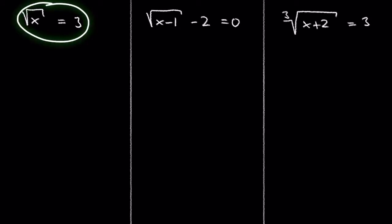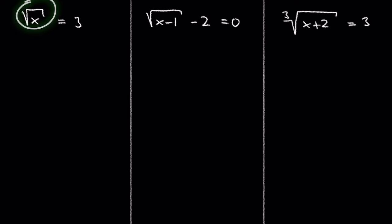Let's start with this easy example: the square root of x equals 3. When solving radical equations, the first step is to isolate the root on one side of the equation, which is already done in this example. The square root of x stands alone on the left-hand side. The second step is to square the square root to get rid of it — squaring cancels out the square root. Don't forget to also square the right-hand side: 3 squared is 9, so we get x equals 9.